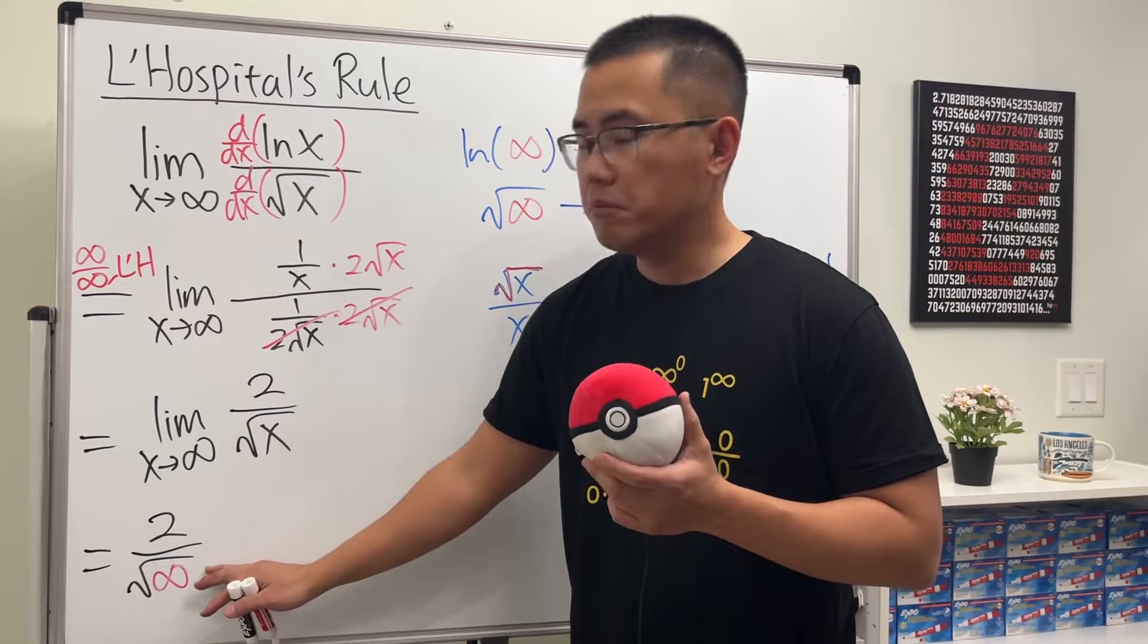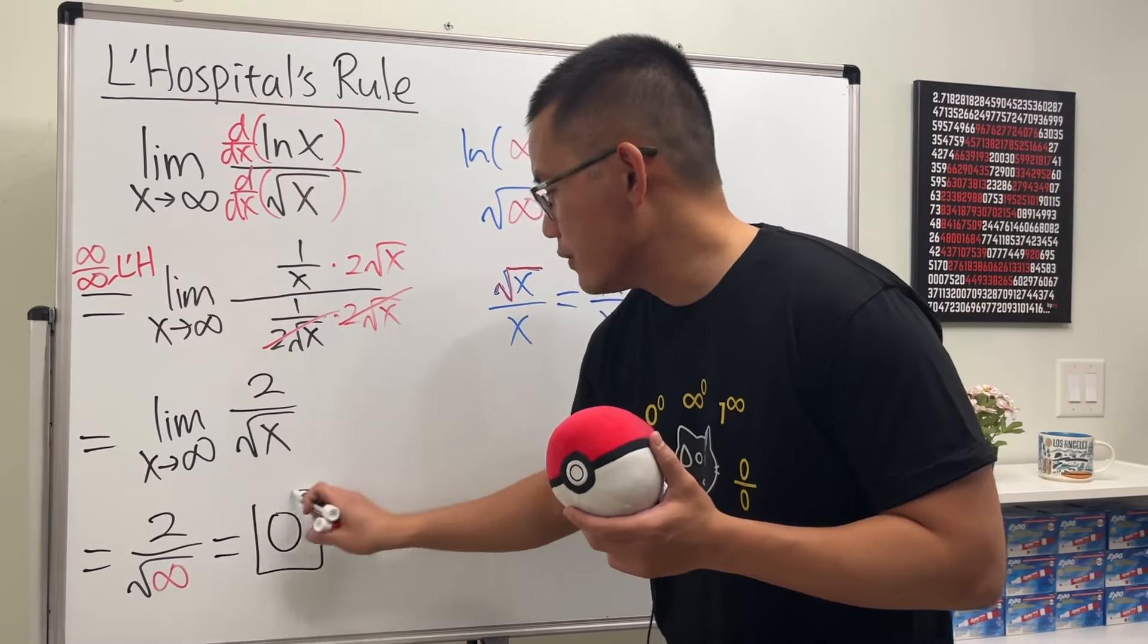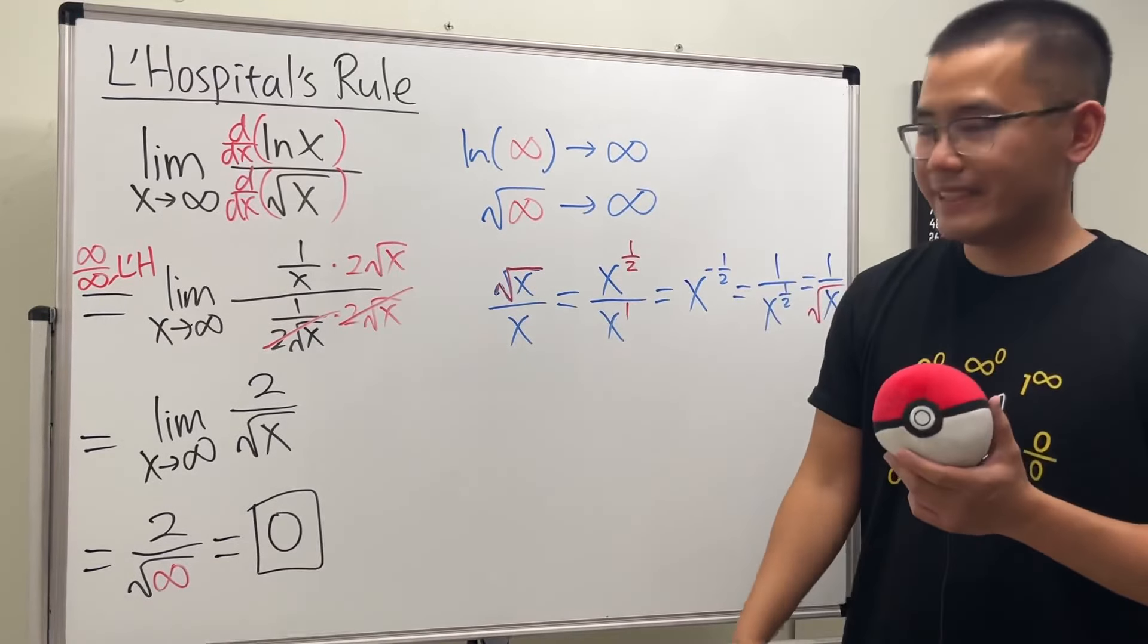2 over infinity is 0. So the final answer is just equal to 0. And that's it.